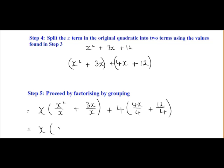So x squared divided by x is just x, 3x divided by x is 3, 4x divided by 4 is x, and 12 divided by 4 is 3.